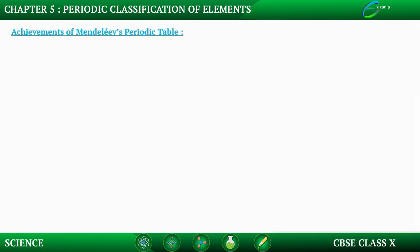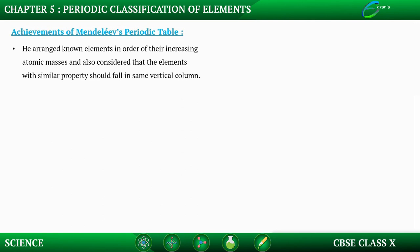Mendeleev's periodic table has many achievements. He arranged known elements in the order of increasing atomic masses and ensured that elements with similar properties fall in the same vertical columns. He took great effort in finding the relationship between atomic masses and their physical and chemical properties to achieve this arrangement.